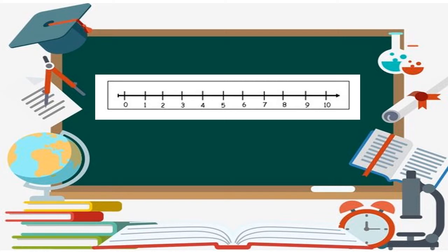The number line starts from zero. Now, what is the predecessor? Let's see what is the predecessor of number five. The predecessor of the number five is number four — that is the whole number. Similarly, number three is the predecessor of the number four.